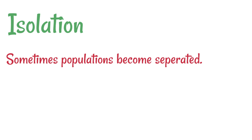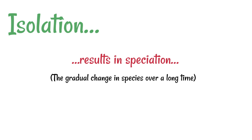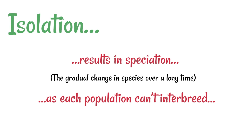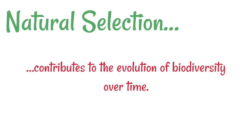Sometimes some populations might become separated. For example, a big mountain range forms by geological activity, so we've got one population covering an area and that population suddenly gets split in half. Isolation could result in speciation, and speciation is the gradual change in species over time. As each population can no longer interbreed with each other, they might be exposed to different environments. Population A splits into populations B and C — two completely separate populations — because maybe the climate is slightly different, or one has to be adapted to having snow cover on the ground. So natural selection contributes to the evolution of biodiversity over time.